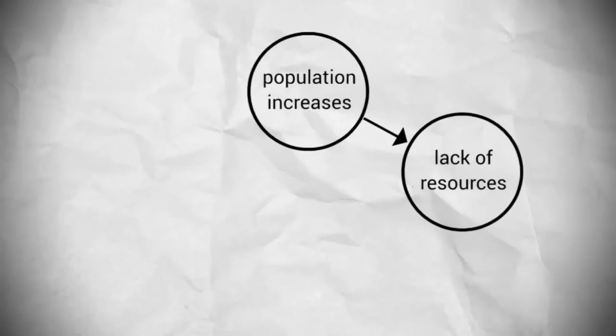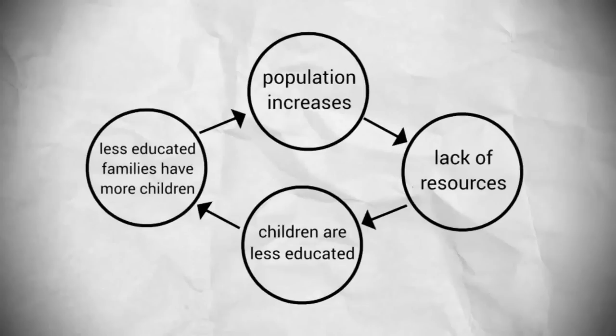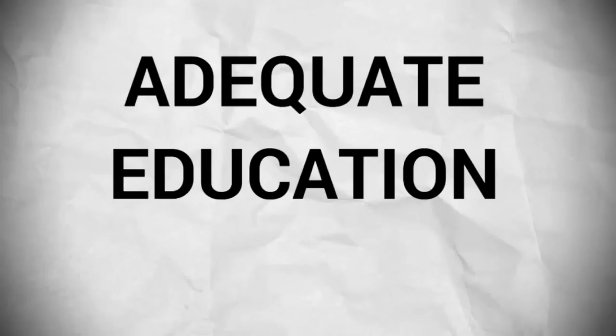As population increases, there aren't enough resources available for educating children, and less educated families tend to have more children. The only way to break this cycle is by providing them with an adequate education, which will alleviate both problems of population and poverty.